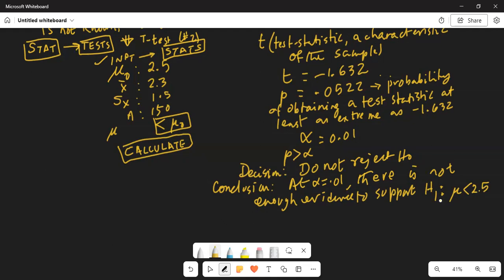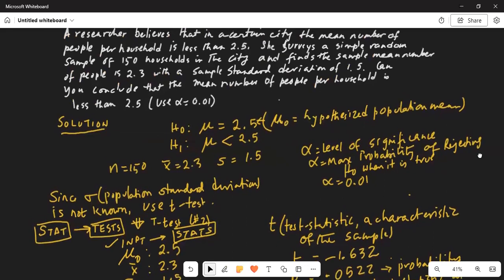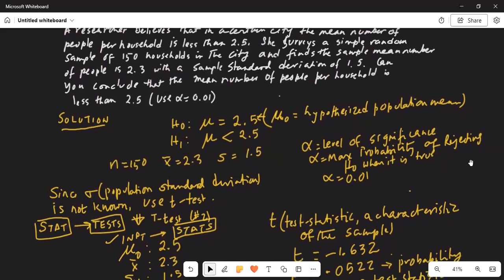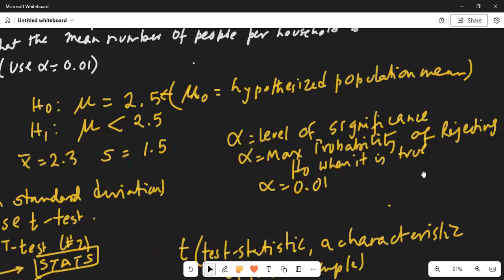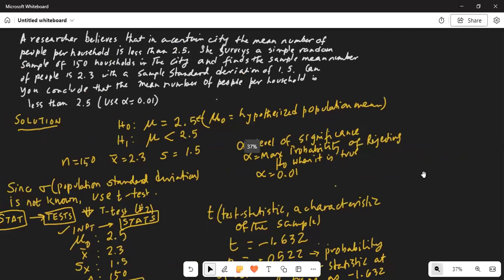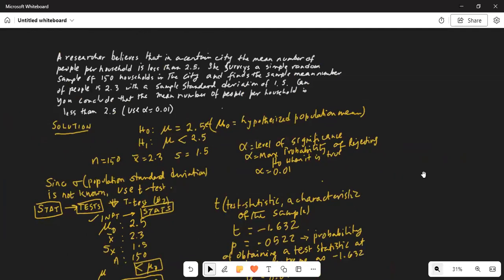Let me walk you slightly slowly through what I did. First we have to write the null and the alternate hypothesis. The alternate hypothesis is the hypothesis which we are testing whether we have enough evidence to support it or not. And the last statement in the problem says, can you conclude that the mean number of people per household is less than 2.5. So, alternate which is h sub 1 is mu less than 2.5. Our null hypothesis always contains the equality. So, mu is equal to 2.5. This 2.5 is the hypothesized value.